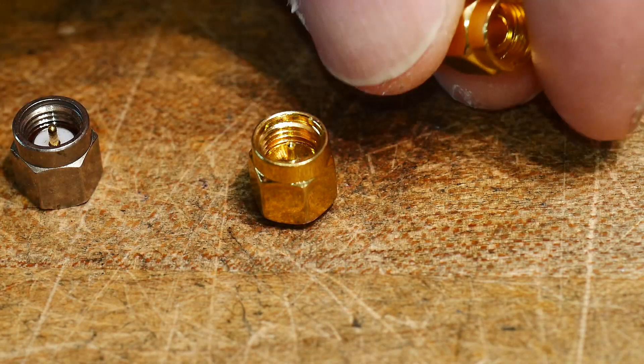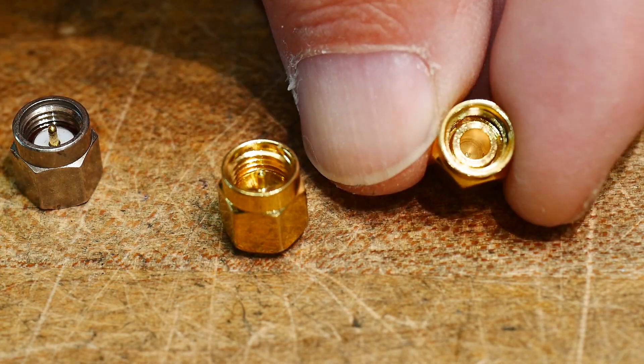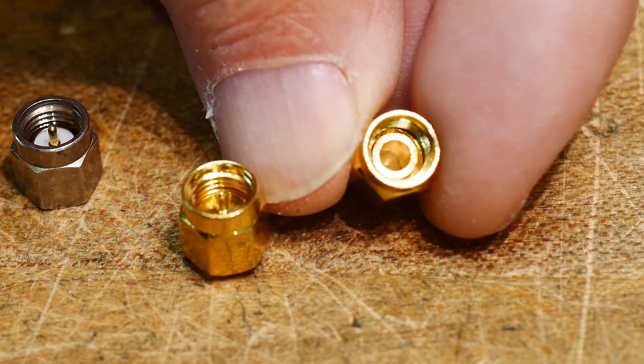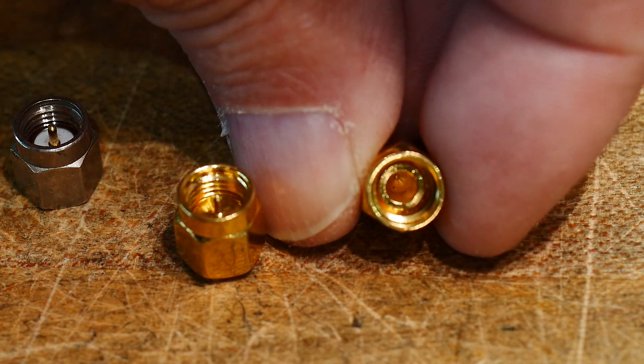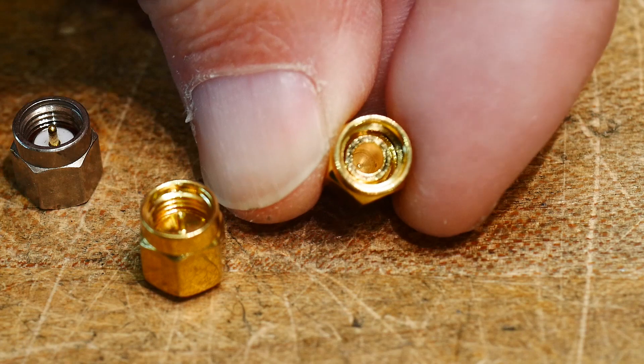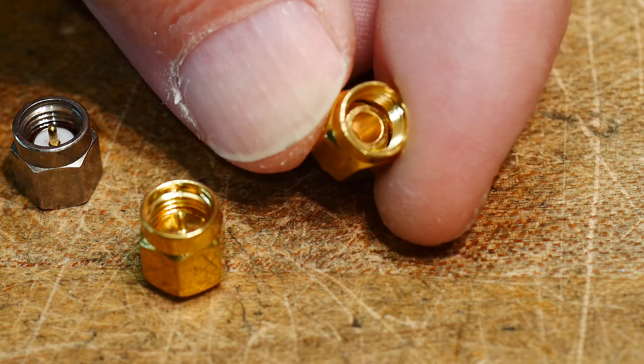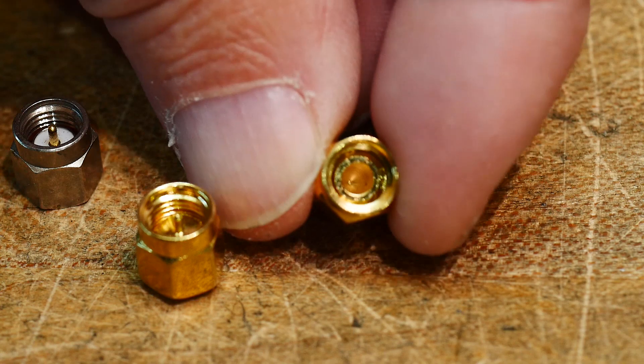Alright so if you look on the inside this one's kind of like got just nothing. It's kind of like the letter O. So remember that letter O is open. This is the open one. There's nothing in there. There's no pin. There's no nothing. It's just open. So this is the open.